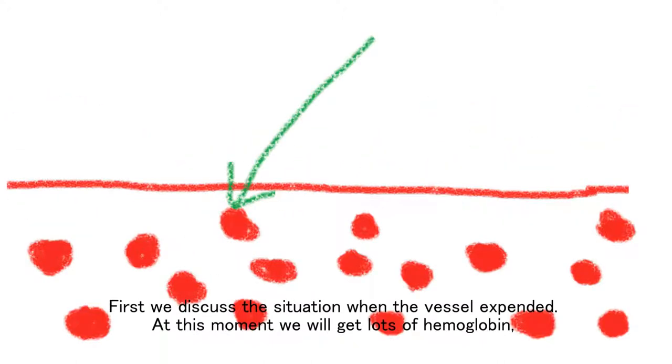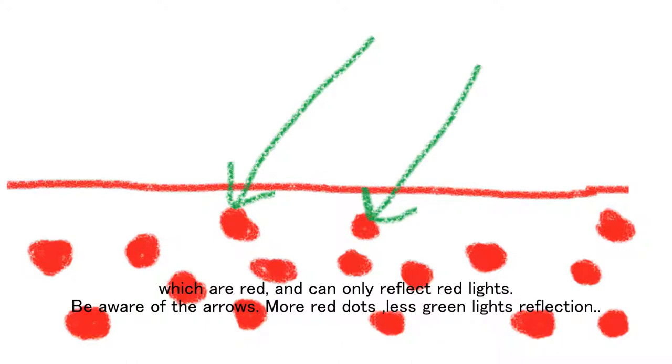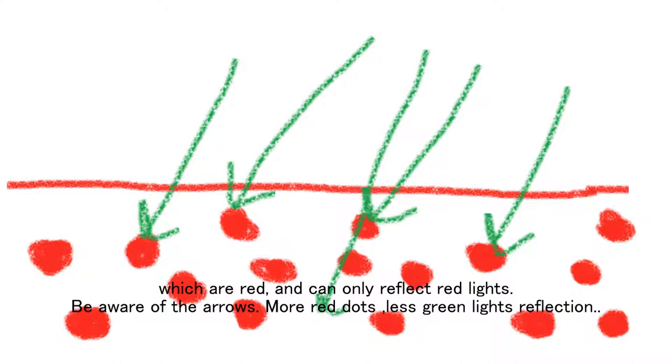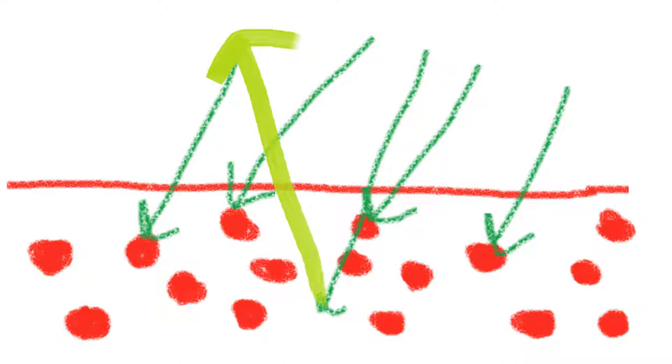is expanded. At this moment, we will get lots of hemoglobin, which are red and can only reflect red lights. Be aware of the direction of the arrows. So more red dots means less green light reflection. Look, we only got one green